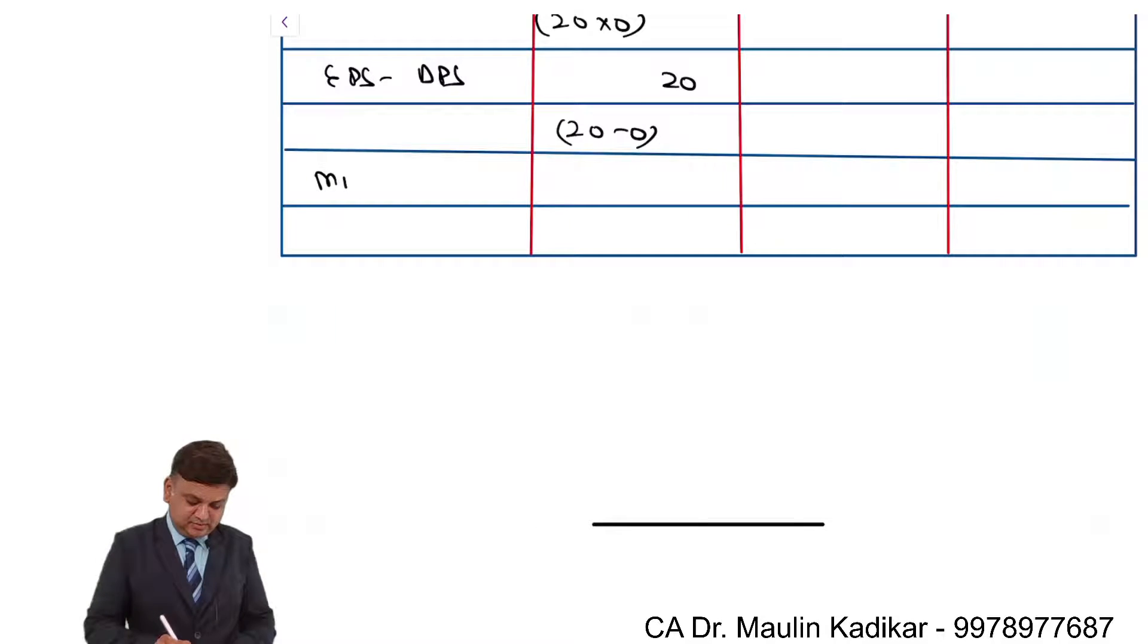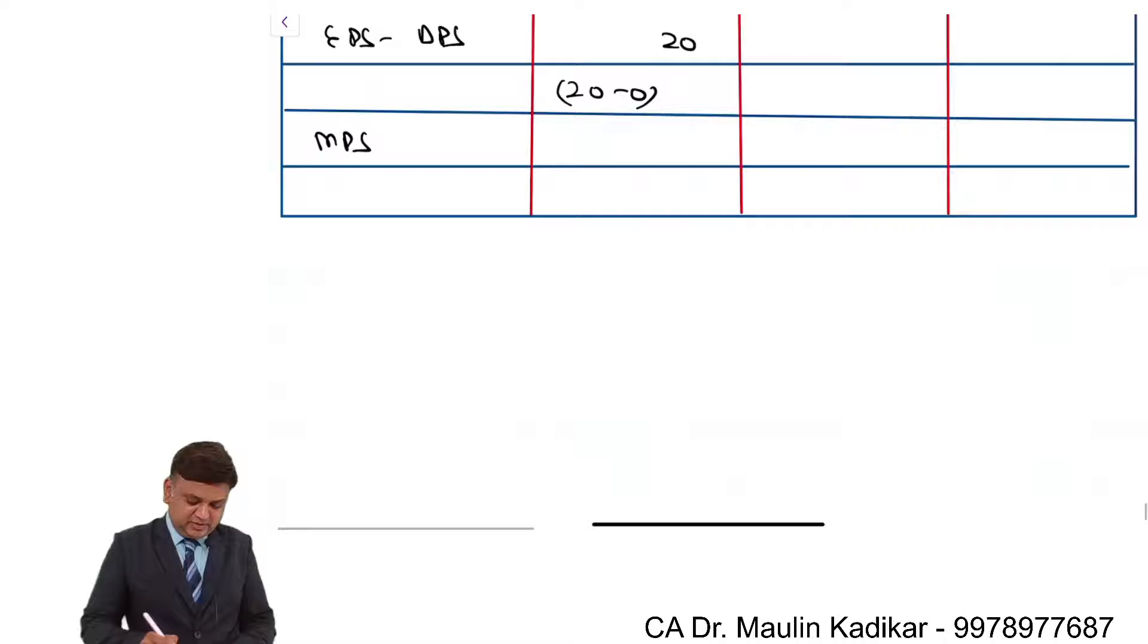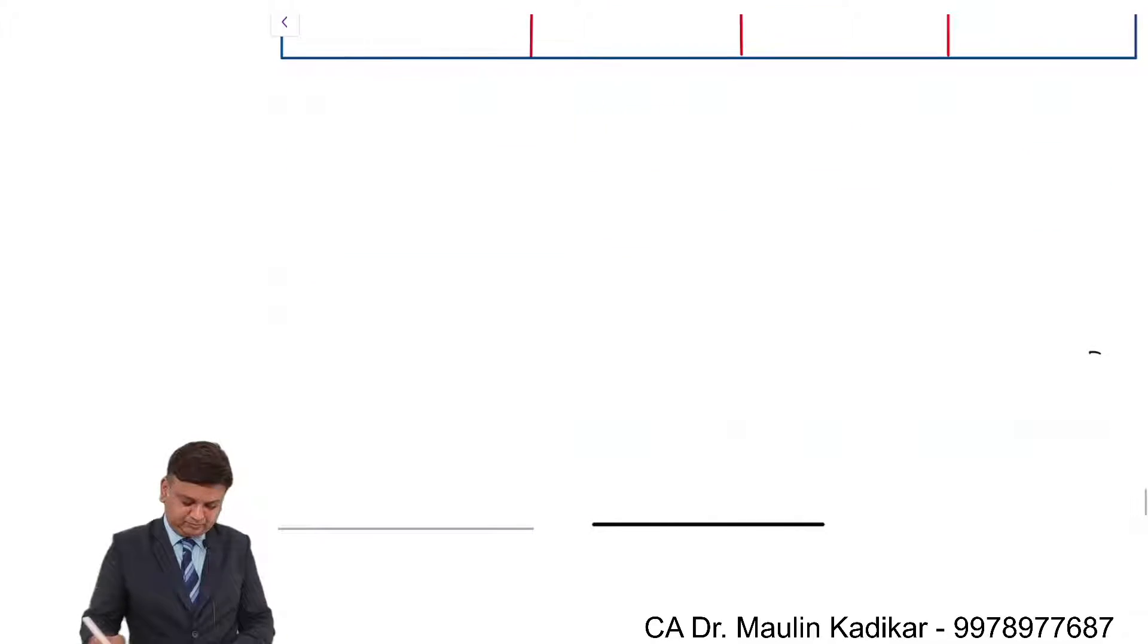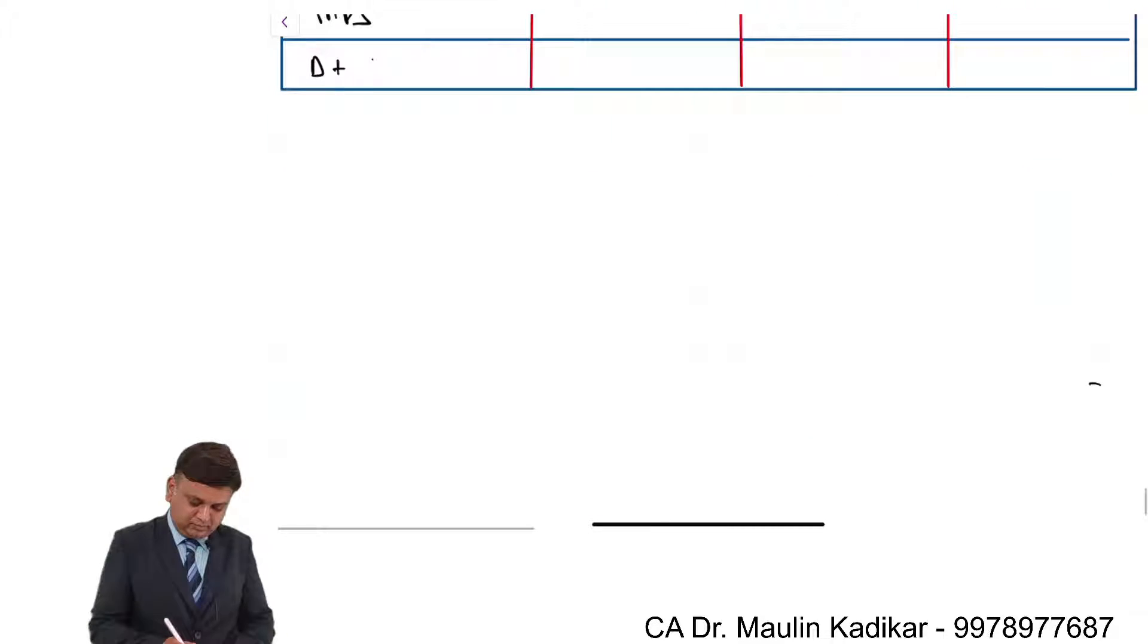And the last is MPS. That is dividend payout ratio plus EPS minus DPS into R upon Ke, whole upon Ke.